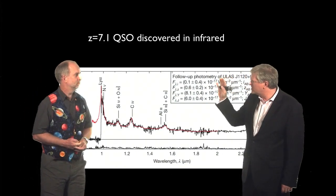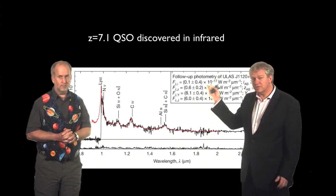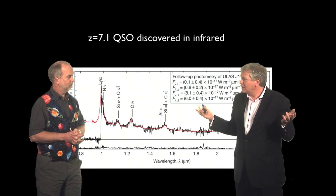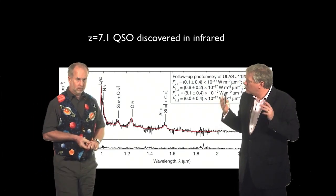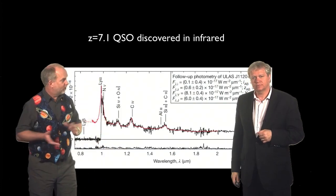So it seems like there is a real trend here, which beyond a redshift of six or so, the universe seems to be full of neutral hydrogen, like we sort of expected it should be. And that seems to be when the era of reionization occurred. So it looks like it's all done and dusted.